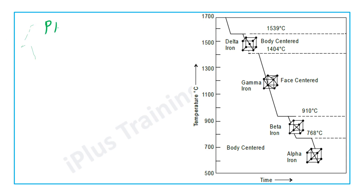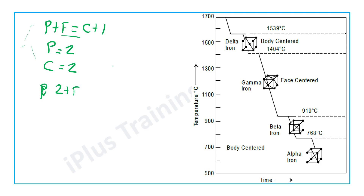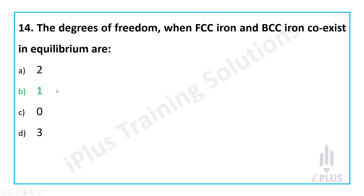Using the Gibbs phase rule: P + F = C + 1. The number of phases is 2 — gamma iron (FCC) and beta iron (BCC). The number of components is 1 (pure iron). So 2 + F = 1 + 1, which gives F = 1. The number of degrees of freedom is 1 where BCC and FCC forms coexist.